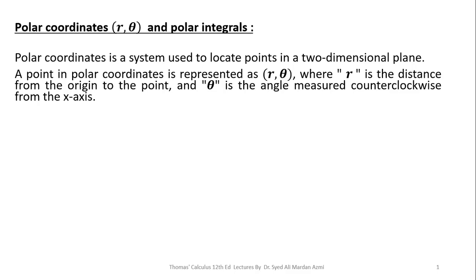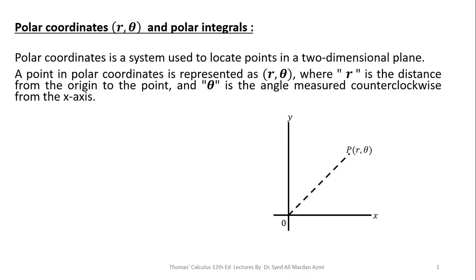A polar coordinate is a system which is used to locate a point in a two-dimensional plane. A point in polar coordinates is represented by R and theta, where R is the distance of the point from the origin and theta is the angle made in counterclockwise direction with positive x-axis. In this diagram, if P is a point, then this line represents the value of R — the distance of the point from the origin — and theta is the angle made by this point with the positive x-axis in counterclockwise direction.